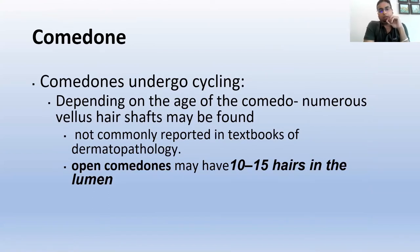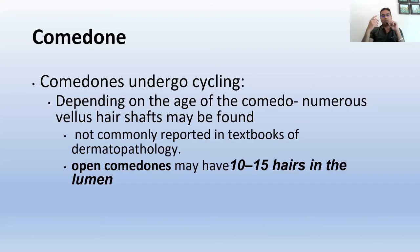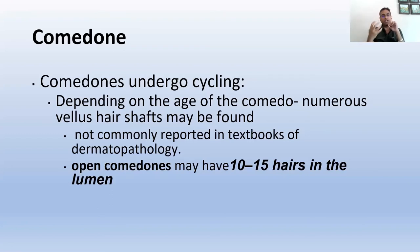One more important thing: comedones, but not milia, undergo cycling. Depending on the age of the comedone, numerous vellus hair shafts may be found within them. The hair cycle continues, and because the hair root continues to produce new vellus hair shafts and there is outlet obstruction at the top, these hair shafts get emptied into the comedonal cyst, leading to their retention. Closed comedones are supposed to have about one or two hair shafts within them, but open comedones may have up to 10 to 15 hairs in the lumen.